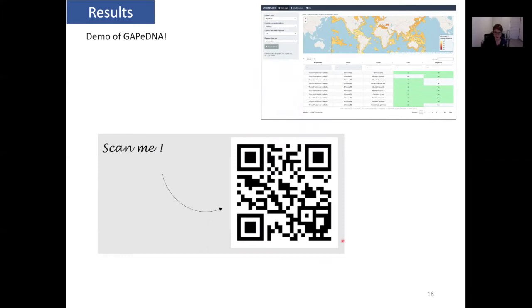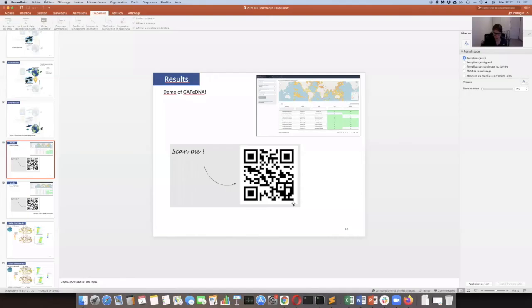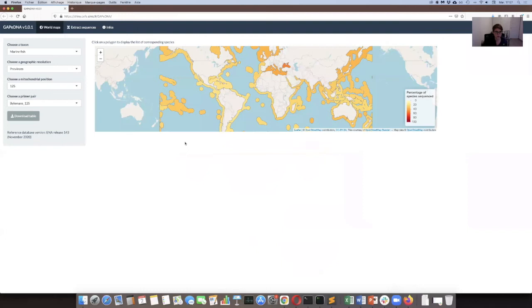As a result, a small demo of GAPiDNA. Here's the QR code again. The website looks like this. It's interactive. You can go around. Here you have a small box where you can choose what you want to print, which taxa. We can choose marine or freshwater fish. I'll stay on marine. Then you can choose a geographic resolution. If I go to world, I have a single big polygon, but I'll go to ecoregion. That way we can see the variation across the world. We can choose a mitochondrial position. I'll stay on the 12S. We can choose a primer pair. We'll go to Kelly, for instance.